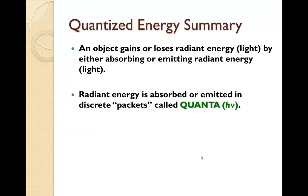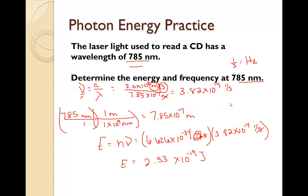An object gains or loses radiant energy, which is light, by either absorbing or emitting radiant energy. Radiant energy is absorbed and emitted in discrete packets called quanta, which is Planck's constant times nu, which is what we just solved for here.